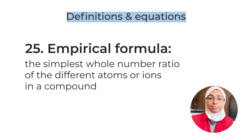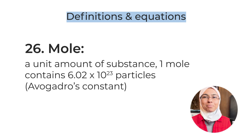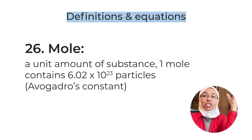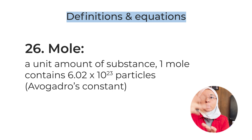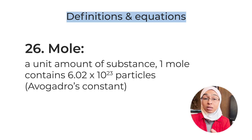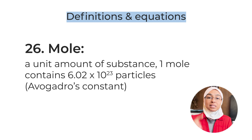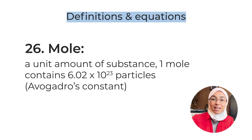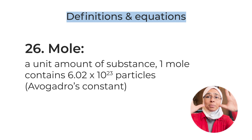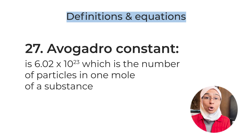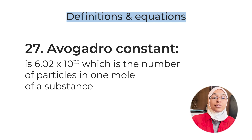Definition number twenty-six: mole — a unit of amount of substance. Each 6.02 × 10²³ number of particles is called a mole, and this number is Avogadro's constant. Definition number twenty-seven: Avogadro's constant — 6.02 × 10²³, which is the number of particles in one mole of a substance. Not a very common direct question, but you should know it.